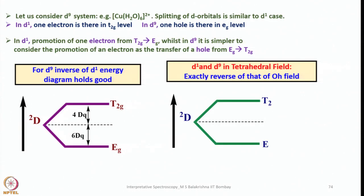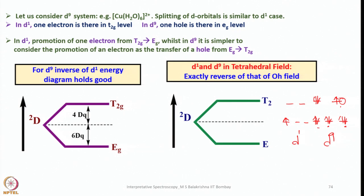Now let us consider a D⁹ example such as hexa aqua copper²⁺. Splitting of D⁹ is very similar to the D¹ case. In D¹, one electron is in the t₂g level. In D⁹, one hole is in the Eg level. The Eg level has dx²−y² and dz², and we have three electrons there. In D¹ we consider promotion of one electron from t₂g to Eg, while in D⁹ it is simpler to consider the promotion of the hole from Eg to t₂g.